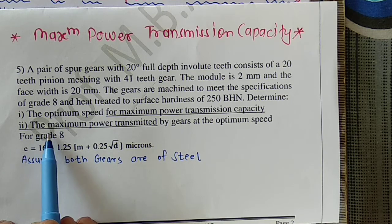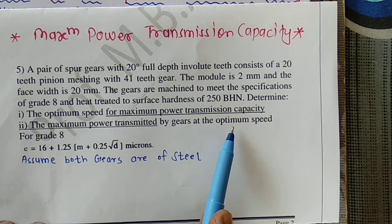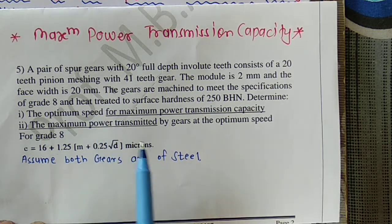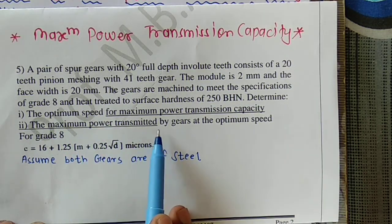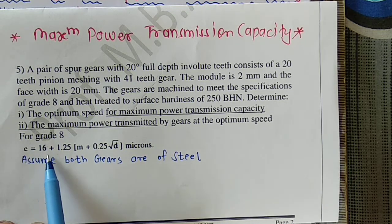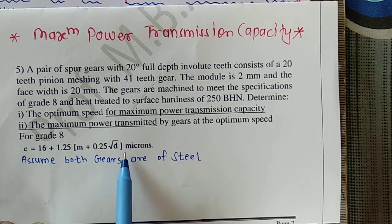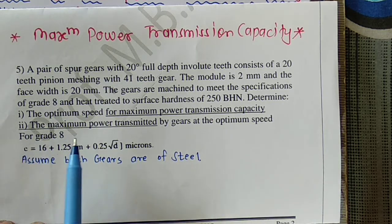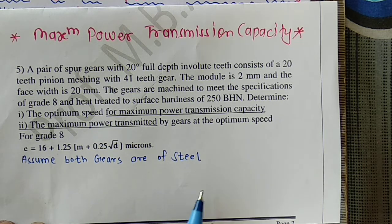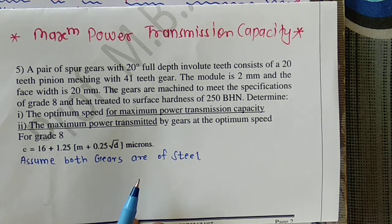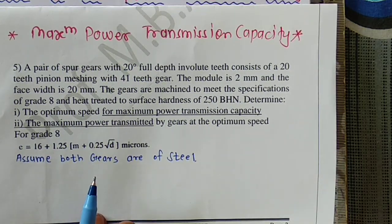The second objective is to find the maximum power transmitted by the gears at optimum speed. For grade 8, the error is given as 16 + 1.25(m) + 0.25√d, with the value in microns. The material has not been specified, so I am assuming both gears are made of steel — pinion as well as gear. You could also assume cast iron or mixed materials, but I am taking the initial condition of both gears being steel.